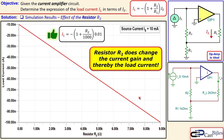That was our example of a current amplifier using an operational amplifier. We derived the formula relating the load current to the source current, and verified our findings using SPICE simulations in Tina-TI. We also examined the effect of the load resistor RL and the gain resistor R2 on the load current. If you have any questions or comments, please let me know. Don't forget to like and share these videos — thanks for your cooperation, and see you next time.